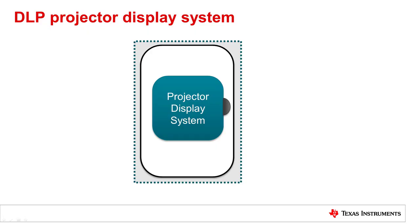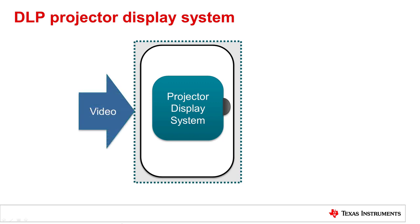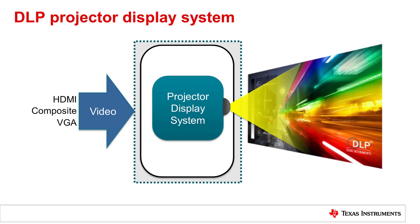At the highest level, a display system based on a DLP projector processes video data from one of several interfaces, like HDMI, composite, or VGA. The projector display system then produces a bright, vivid picture.